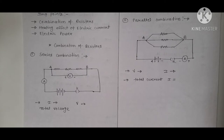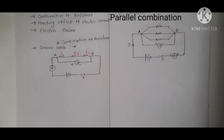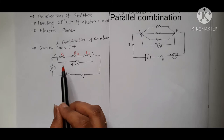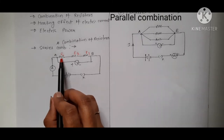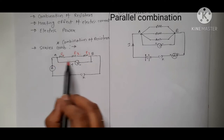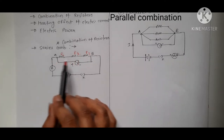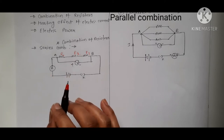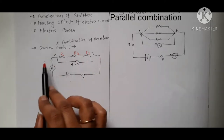There are two types of combinations of resistors: series combination and parallel combination. In series combination, resistors R1, R2, and R3 are connected one after another — end to end. This arrangement is called a series combination.